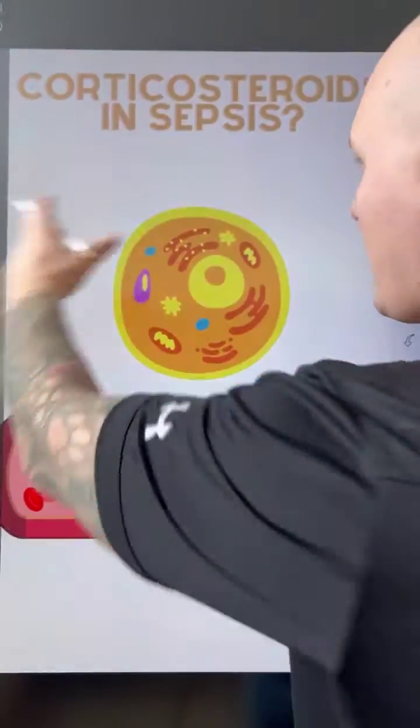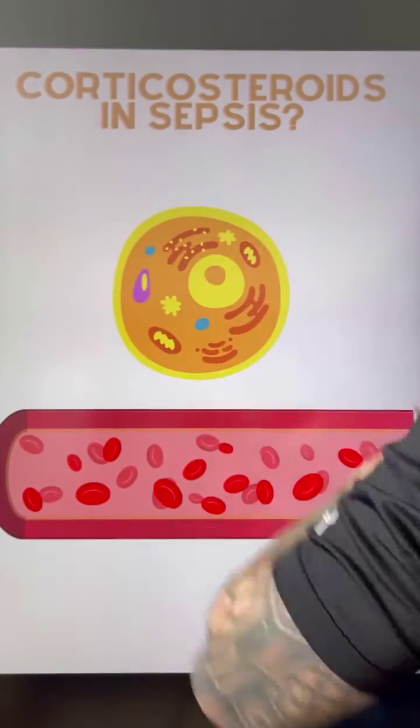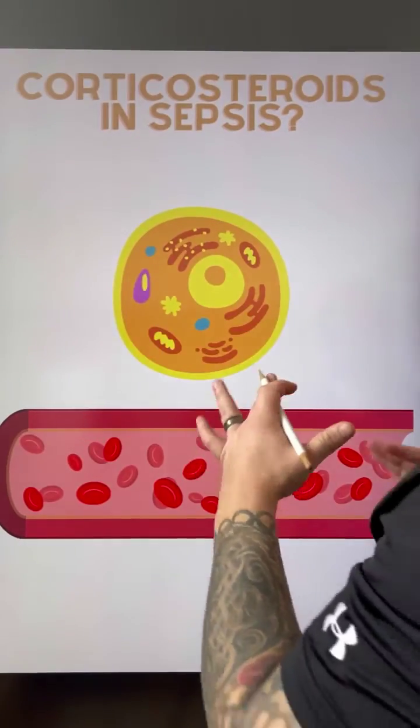If we have an immune process that's happening that's trying to protect us, why would we use something that slows the immune process? Well, it's pretty simple — let me show you. Corticosteroids in sepsis.